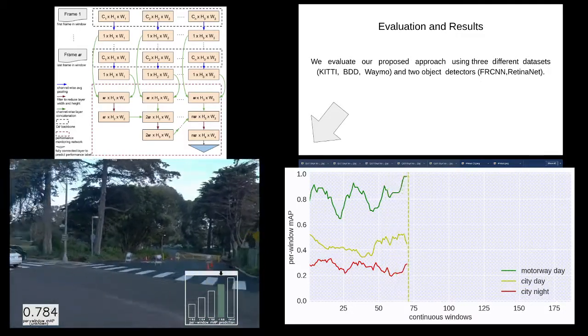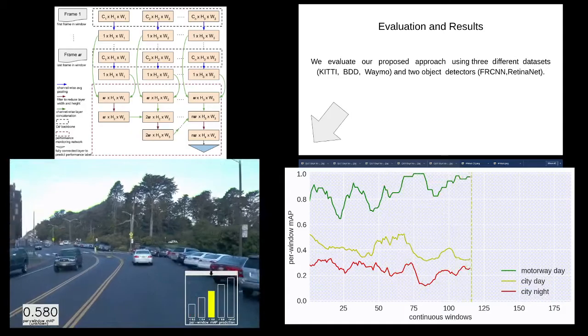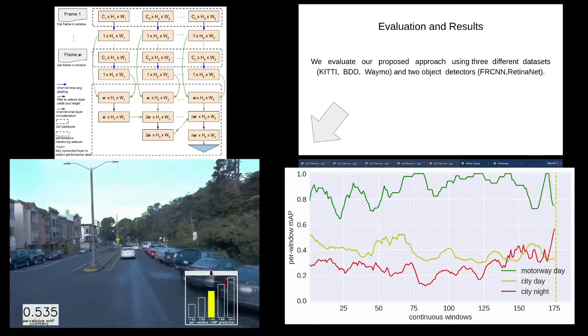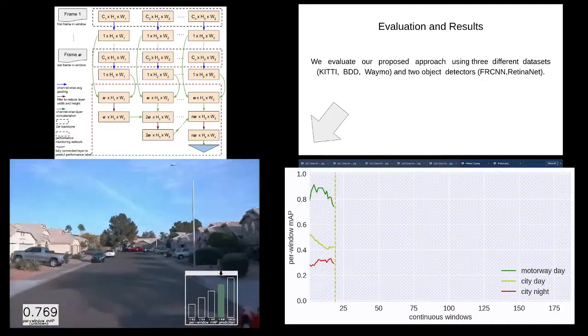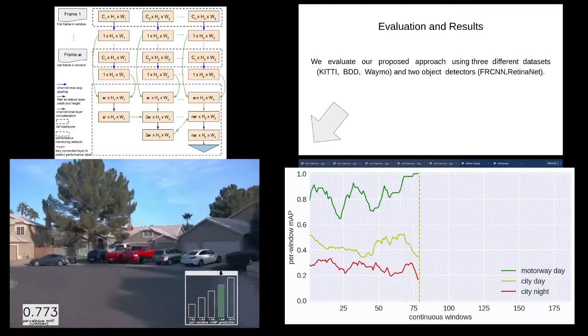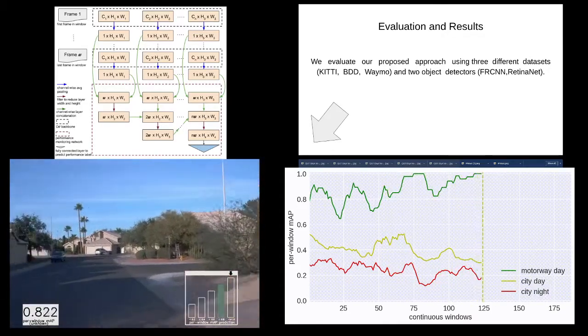The figure on the bottom left corner shows an example of our proposed approach. The number in its left corner shows the MAP of the last 10 consecutive frames. On the right side, we are showing the predicted range of MAP using different color bars. The black down arrow corresponds to the ground truth range of MAP.